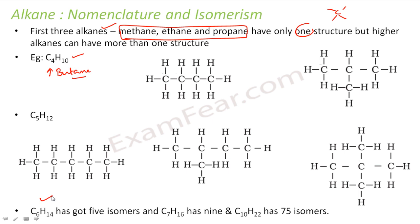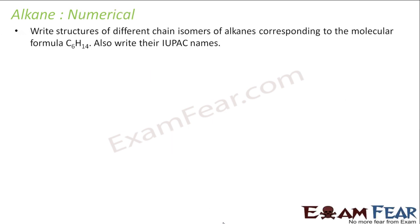C6H14 has five isomers. C7H16 has nine isomers. C10H22 has 75 isomers. As the carbon count increases, the number of isomers also increases. That's why isomers is a critical topic in this chapter — to understand alkanes properly you should know isomers.